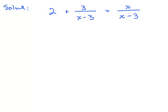Here's a similar problem — try pausing the video to solve it. You can solve it in more than one way. In the last problem I subtracted a fraction from both sides. Here I'll do it differently: I'll look at the denominators, find the least common denominator, which is (x minus 3), and multiply everything by (x minus 3). Both approaches accomplish the same goal.